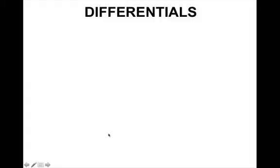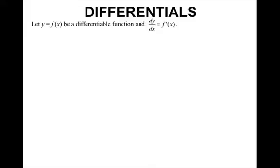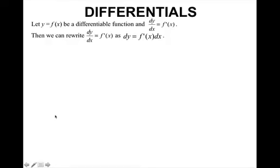Alright, with linear approximation, we get differentials. Differentials are basically the exact same thing that we just did, just written in a different format. So we're going to let y equal f(x) be a differentiable function and dy/dx equal f prime. Then we can rewrite dy/dx equals f prime as dy equals f prime of x dx — I just multiplied both sides by dx.